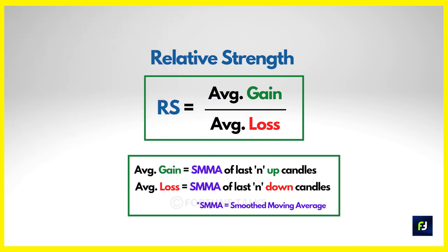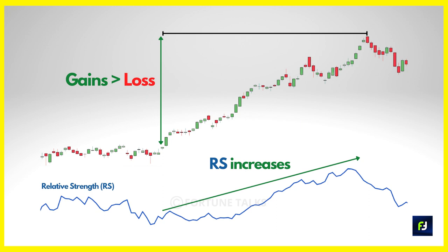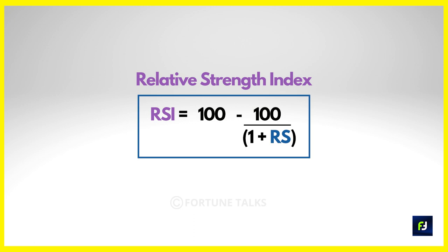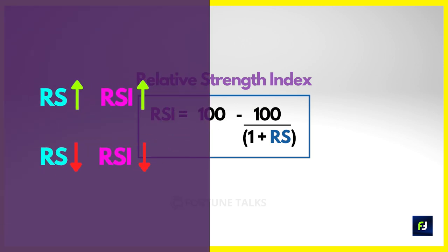When the price moves up quickly with little or no pullbacks, your average gain is large because the price is making positive gains, which leads to a higher RS value. Likewise, when the price falls very quickly with little or no pullbacks, your average loss is large, leading to a lower RS value. Because RS is in the denominator, the larger the RS value, the higher the RSI value, and if RS is lower, RSI will also be lower.